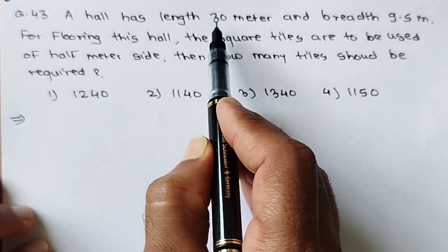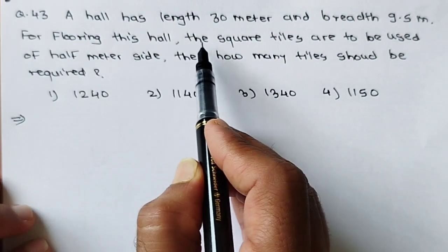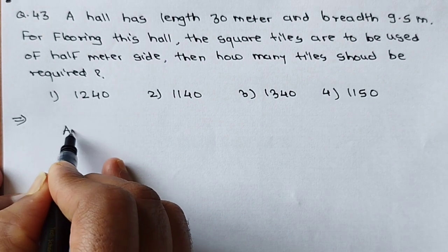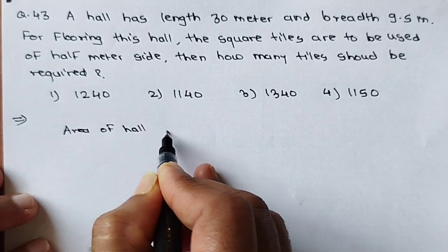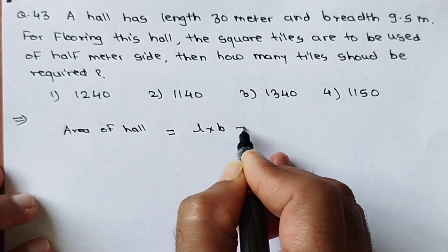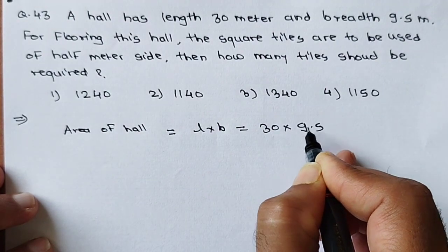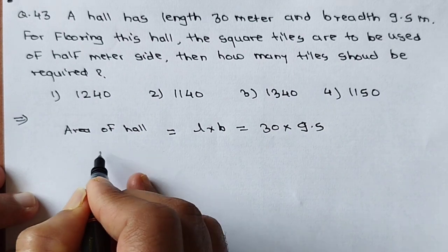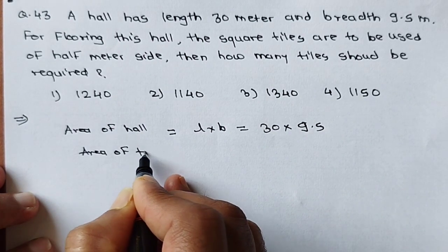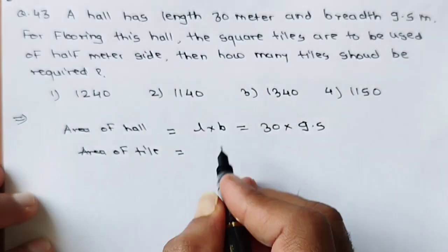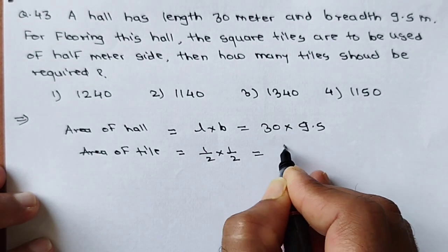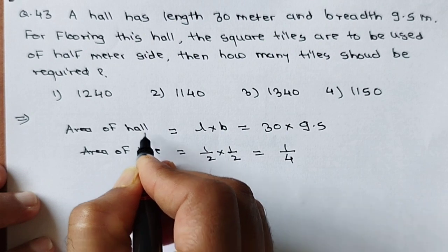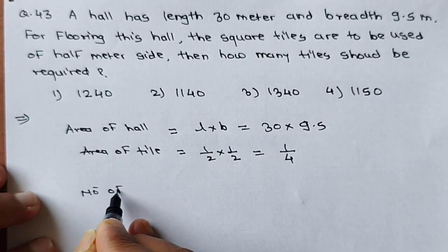See question number 43. A hall has length 30 meter and breadth 9.5 meter. For flooring this hall, square tiles are to be used of half meter size. How many tiles should be required? We need to calculate the area of the hall. Area of hall equals length into breadth, that is L into B — length is 30 meter, breadth is 9.5 meter. Do not calculate yet, just keep as it is because it becomes very easy for further calculation. Area of tile is half meter size, means 1 upon 2 into 1 upon 2, which equals 1 upon 4.